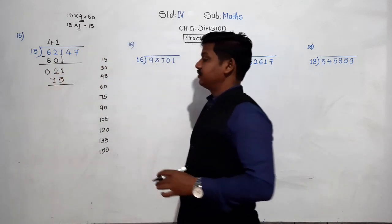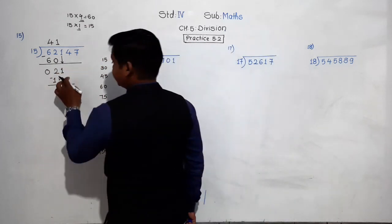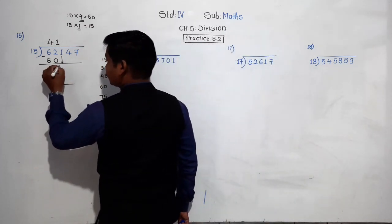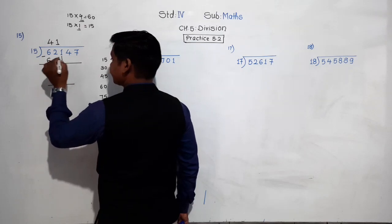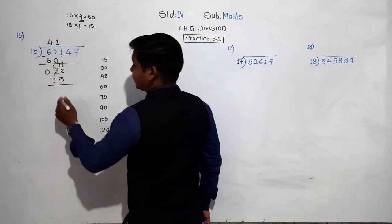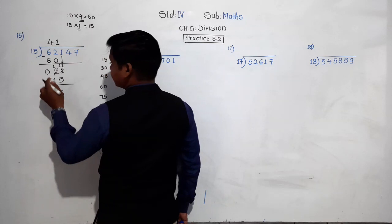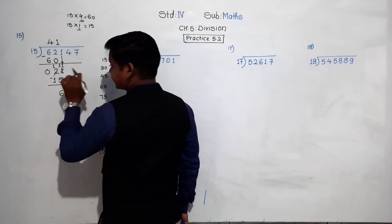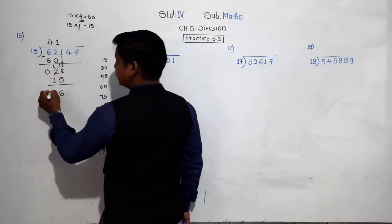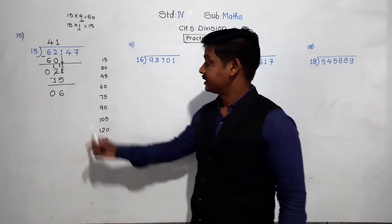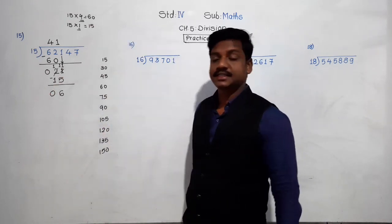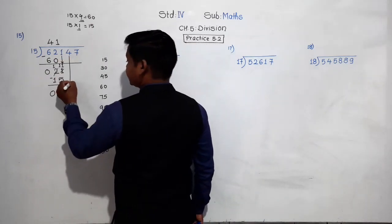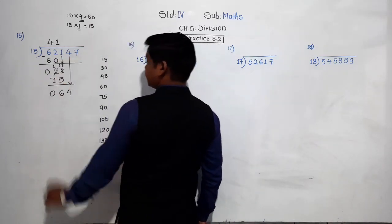Now subtract 15 from 21. 1 minus 5 is not possible, so we take a borrow from the 2. The 2 becomes 1, and the 1 becomes 11. 11 minus 5 is 6, and 1 minus 1 is 0. So 21 minus 15 equals 6. Next, bring the next digit down — that is 4. The number becomes 64. So let's divide 64 by 15.